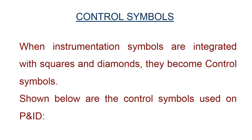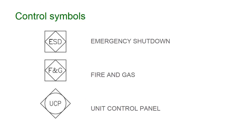Control symbols: when instrumentation symbols are integrated with squares and diamonds, they become control symbols. Shown below are the control symbols used on P&ID, including: emergency shutdown, fire and gas, and unit control panel.